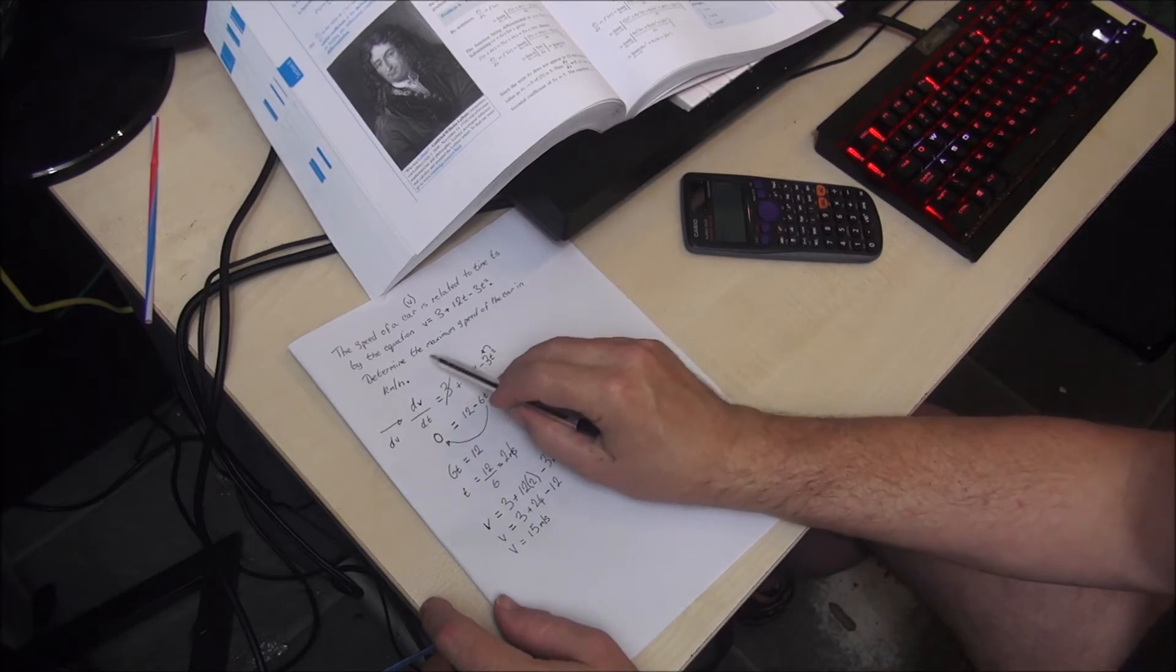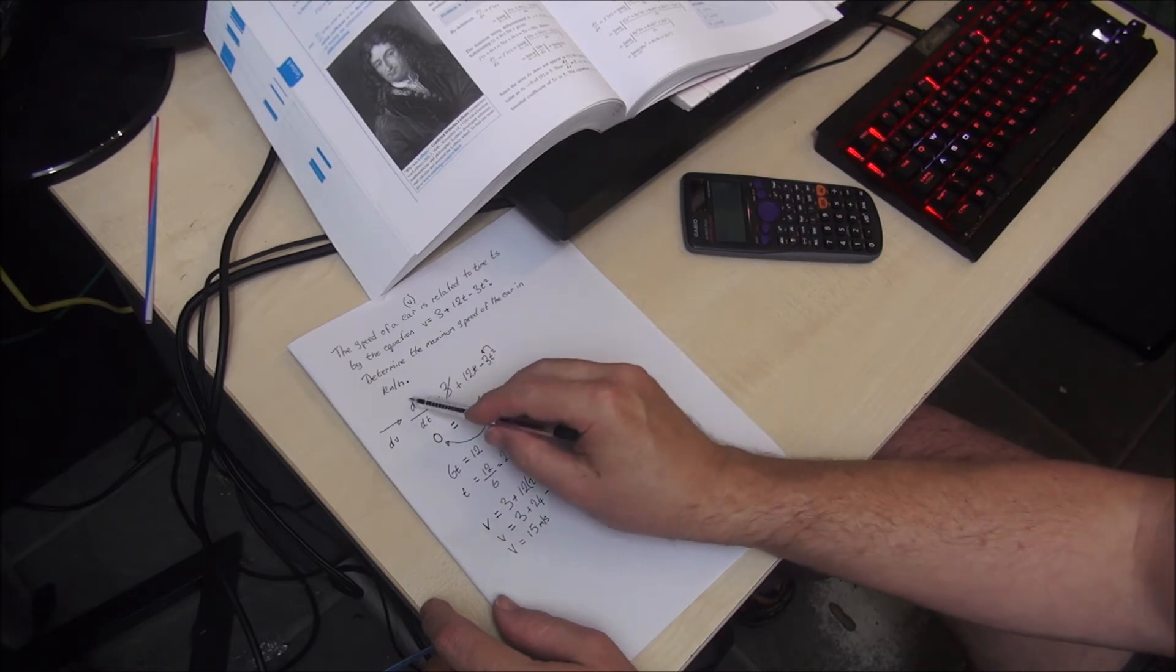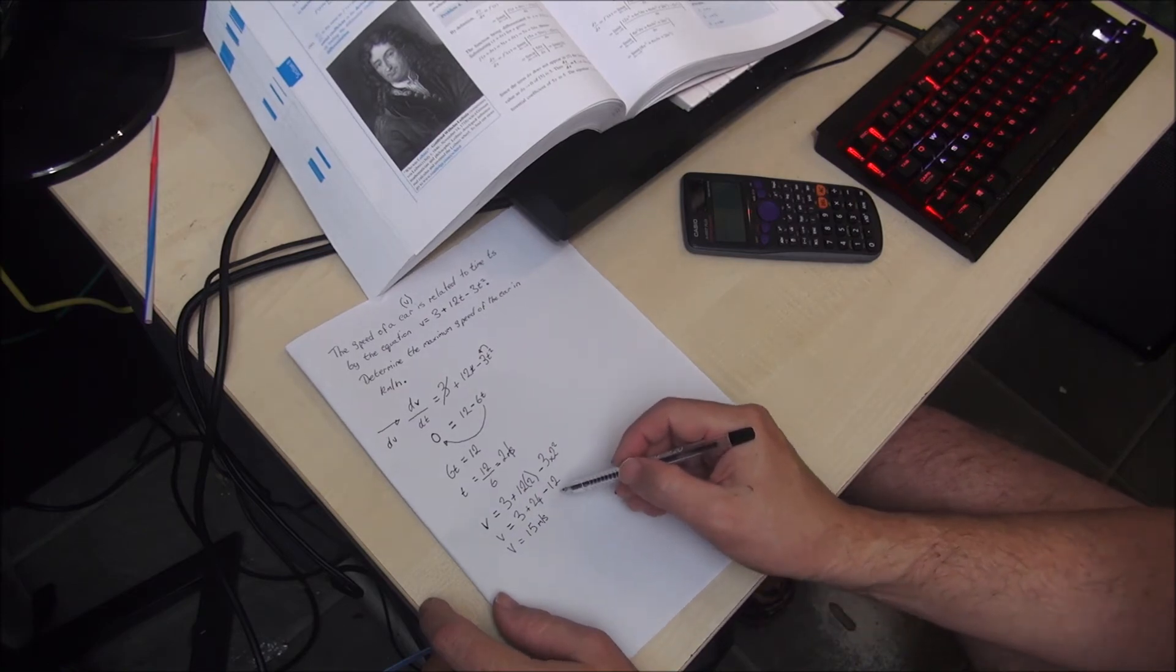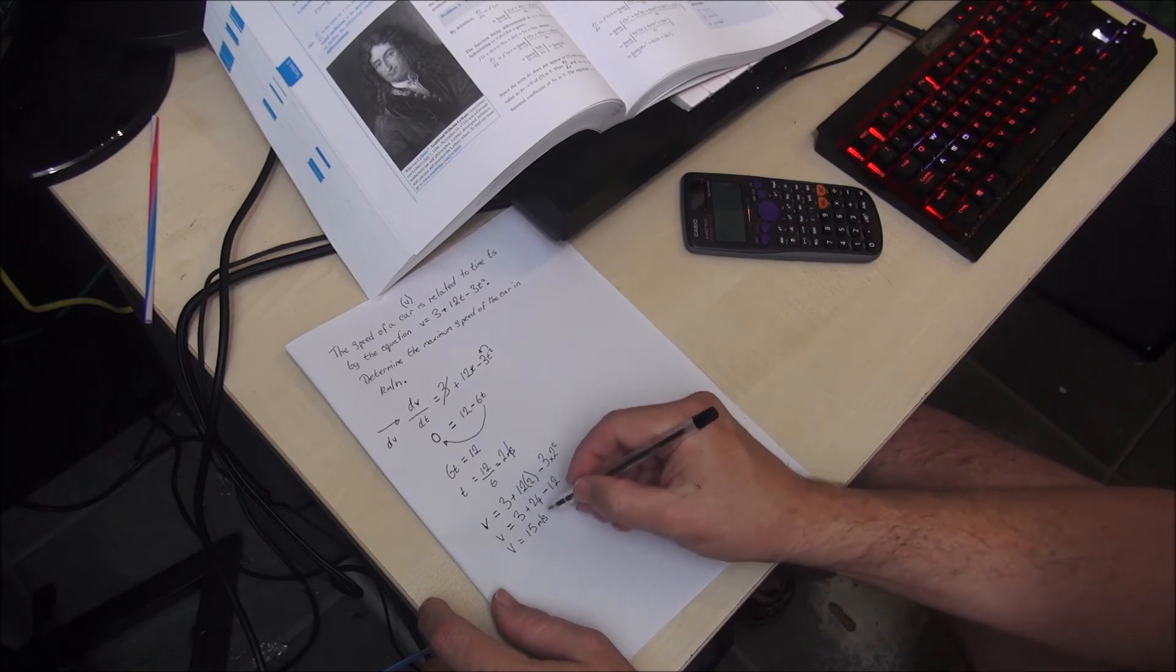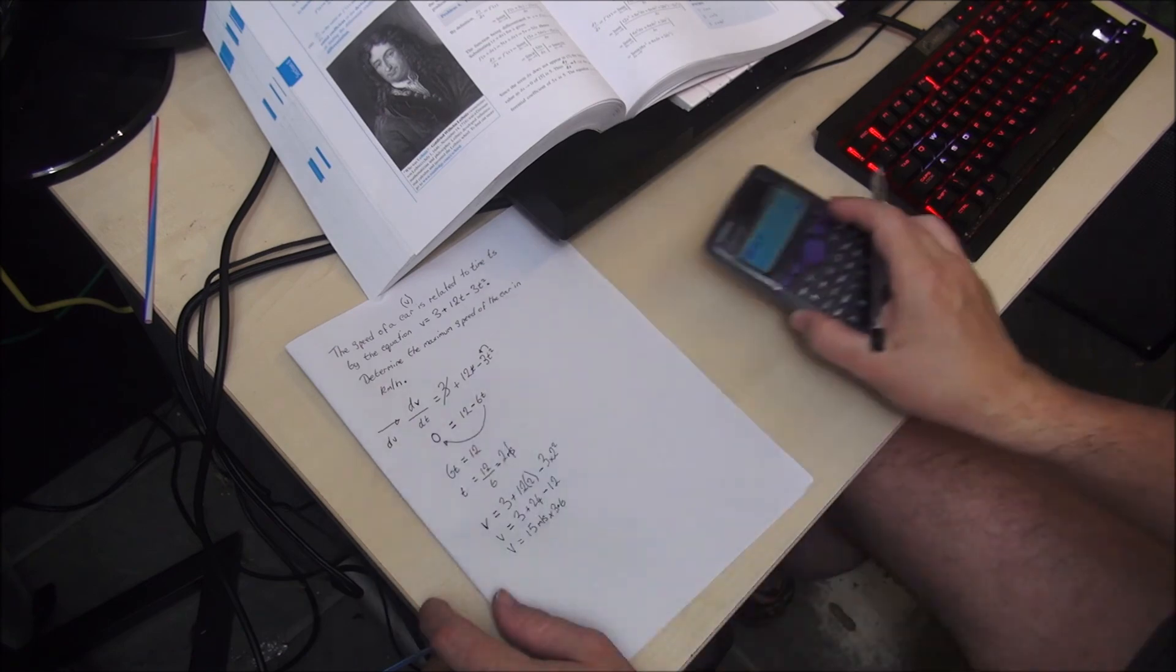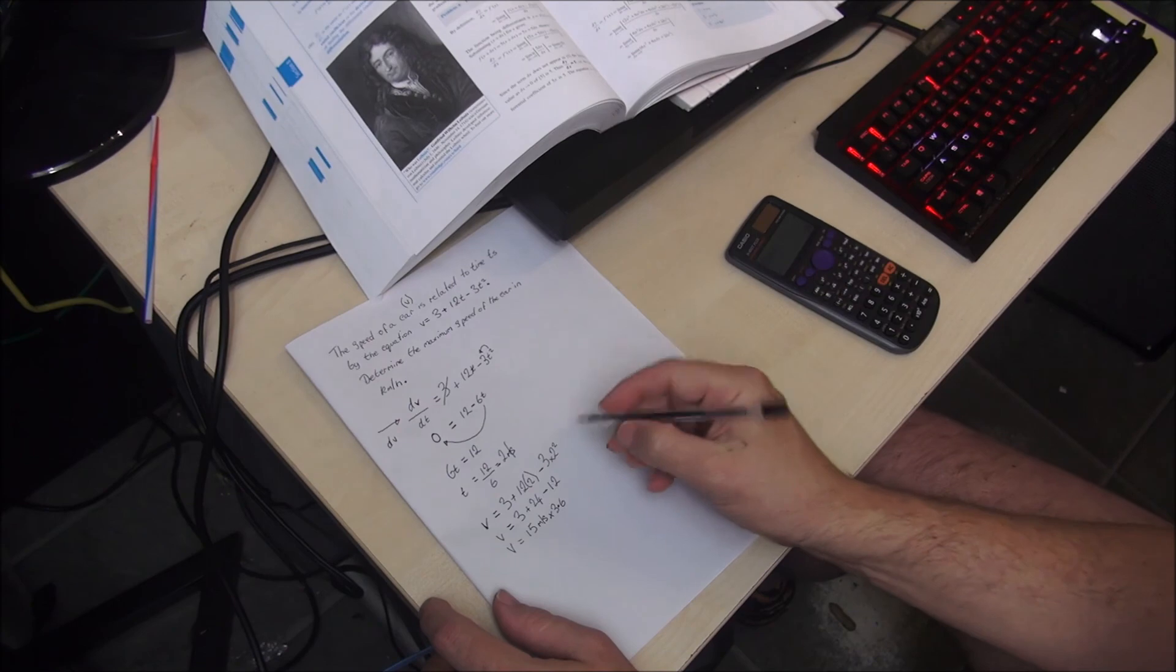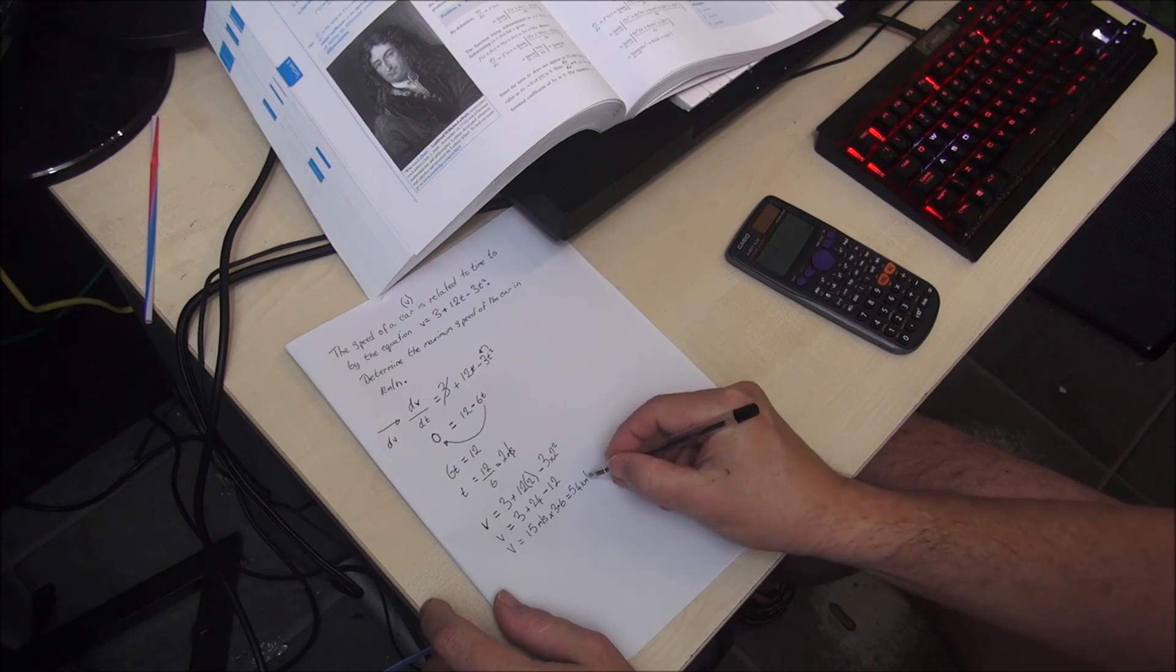But the question says determine the maximum speed of the car in kilometres an hour, so without going through all the maths to prove this, to convert metres per second into kilometres per hour, you simply multiply your 15 metres per second by 3.6. And when you do that on the calculator, which you can probably see there because I did it earlier, you end up with 54 kilometres an hour.